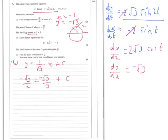So now we take that over to the other side to get the constant equals — root 3 over 6 — actually minus root 3 over 6. So the equation is this.